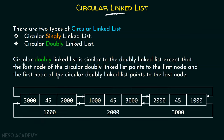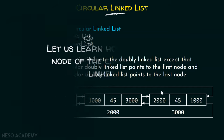Circular Doubly Linked List is similar to the Doubly Linked List, except that the last node of the Circular Doubly Linked List points to the first node, and the first node of the Circular Doubly Linked List points to the last node. So the last node must point to the first node, and the first node must also point to the last node.